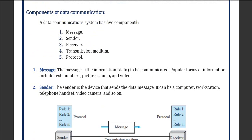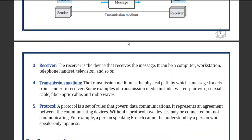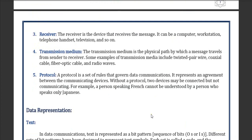There are five components of data communication. The first is the message, which can be text, number, video, audio, or anything else. The second is the sender, who sends the data, and the third is the receiver, who receives the data. The fourth is the transmission medium through which data is sent. The fifth is the protocol — the rules and regulations that must be followed. Protocols can be UDP, SMTP, and others.